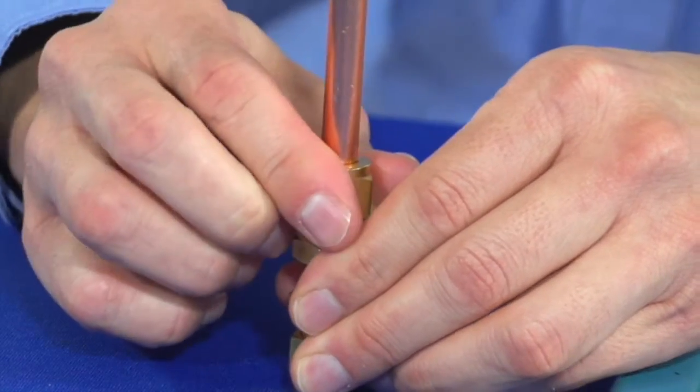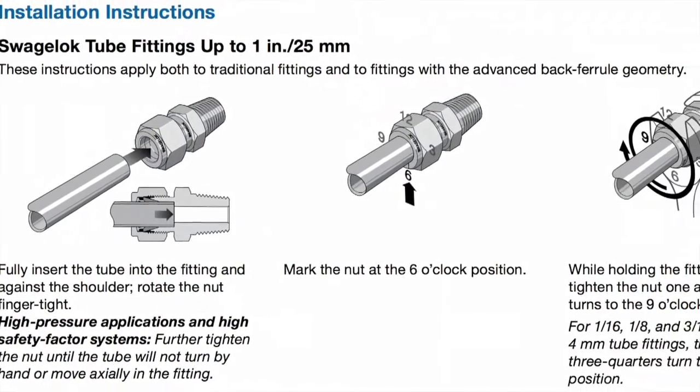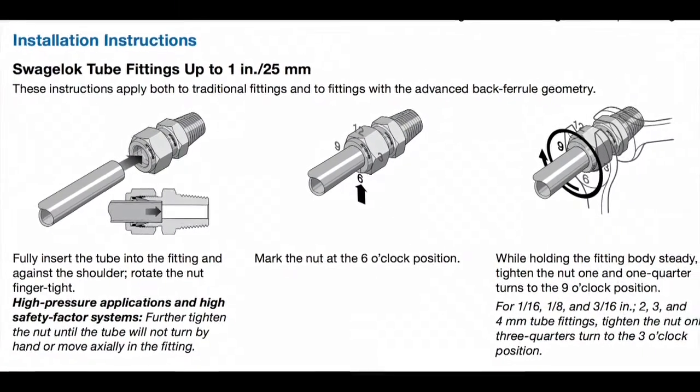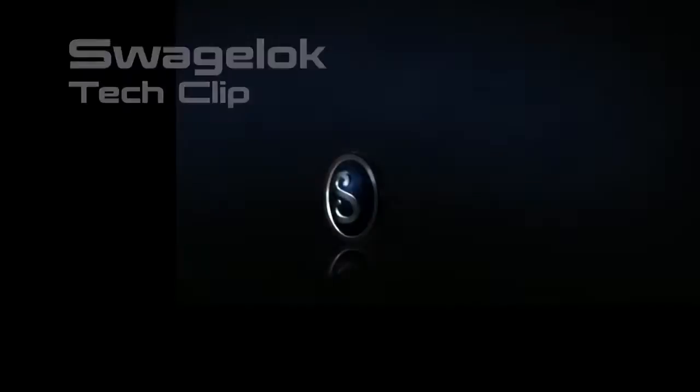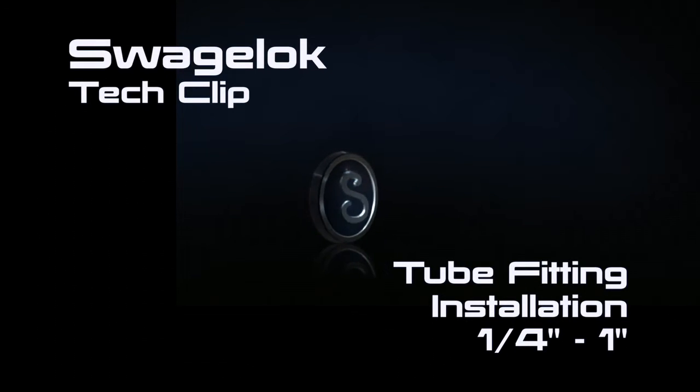Swagelok tube fittings come to you completely assembled finger tight, ready for immediate use. Avoid disassembling the tube fittings prior to installation. The following instructions apply to Swagelok tube fittings from quarter inch or six millimeters to one inch or 25 millimeters.